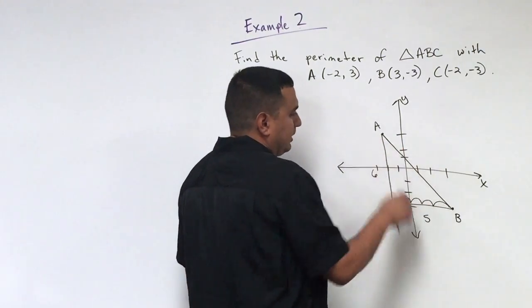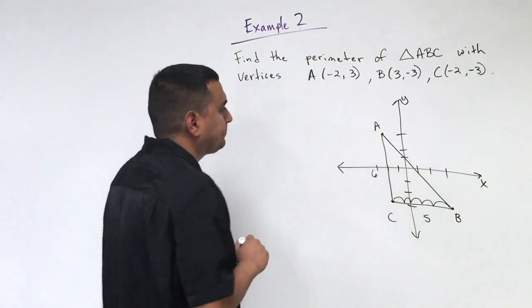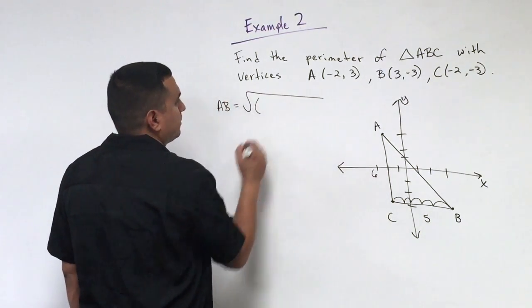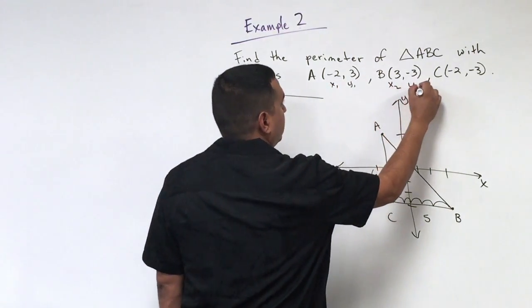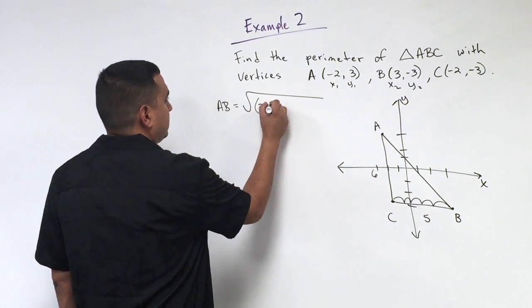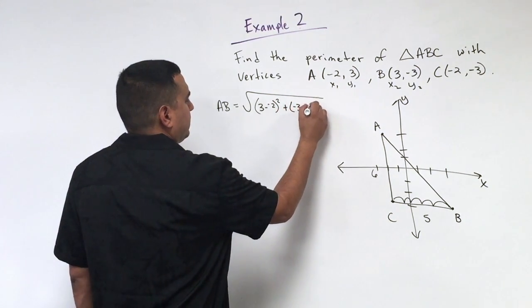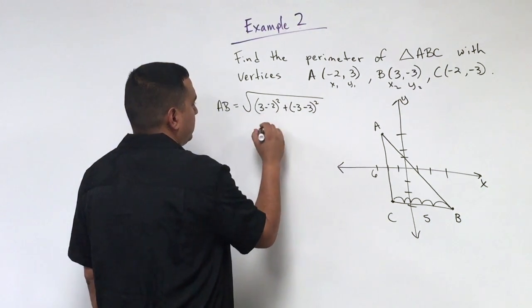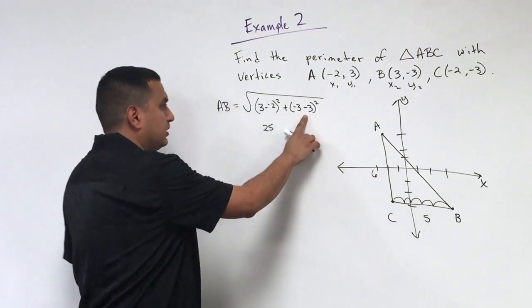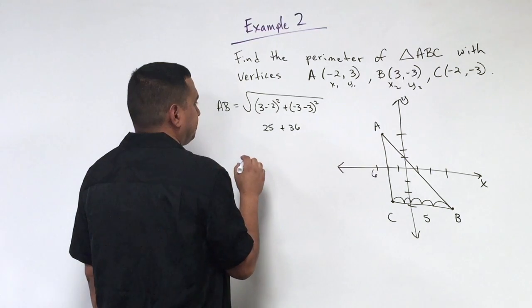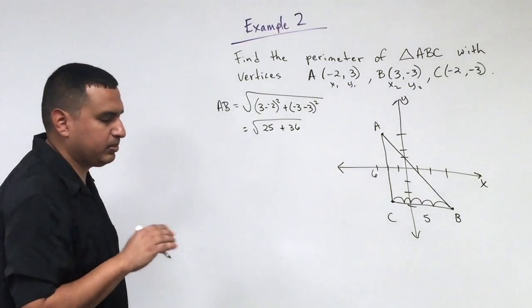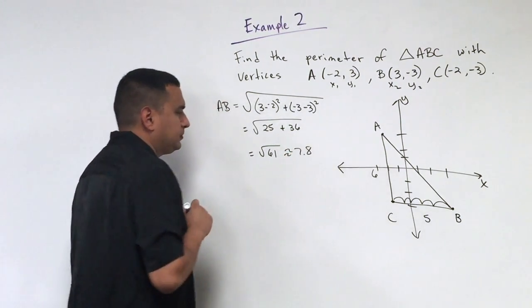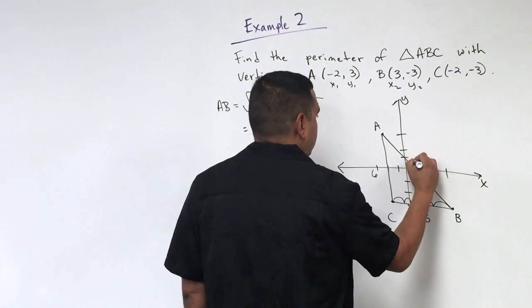Now this one right here, this segment AB, that's slanted. It's a diagonal type line segment. So for that one, I am going to have to use a distance formula. So for AB, I need to take the square root of, this will be x1, y1, x2, y2. So that tells me I want to do three minus negative two squared plus negative three minus three squared. Three minus negative two is five. If I square that, that gives me 25. Negative three minus three is negative six. If I square that, that gives me 36. So I have the square root of 25 plus 36. So square root of 61, and that's going to be about 7.8. So this is approximately 7.8 units.